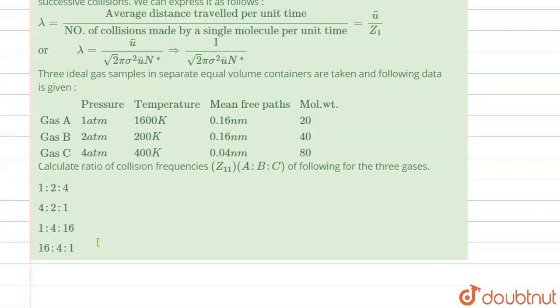We have data given now. Gas A has pressure 1 atm, temperature 600 K, and mean free path 0.16 nm with molar weight 20. Similarly, we have gas B and gas C. So we have to calculate ratio of collision frequencies for A:B:C for the three gases.